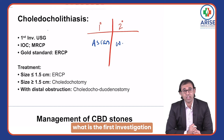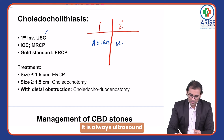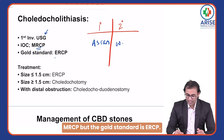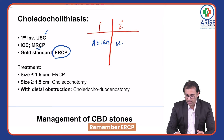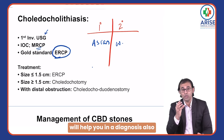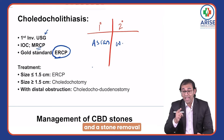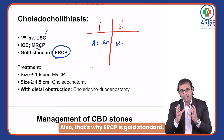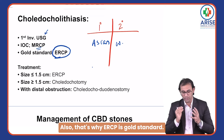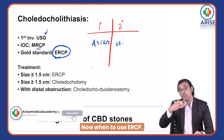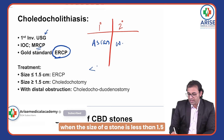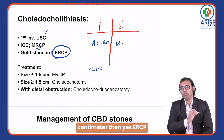Whenever there is a CBD stone, the first investigation is always ultrasound. The investigation of choice is MRCP, but the gold standard is ERCP. ERCP helps in both diagnosis and stone removal, which is why it is the gold standard.